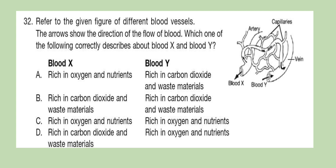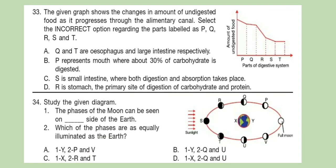Question 32: Refer to the given figure of different blood vessels. The arrows show the direction of the flow of blood. Which one of the following correctly describes about blood X and blood Y? Here are the options.